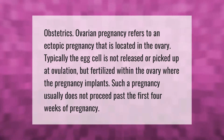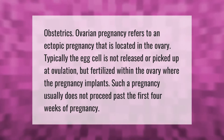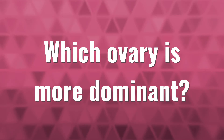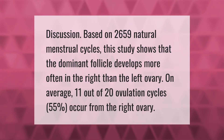Ovarian pregnancy refers to an ectopic pregnancy that is located in the ovary. Typically, the egg cell is not released or picked up at ovulation but fertilized within the ovary, where the pregnancy implants. Such a pregnancy usually does not proceed past the first four weeks of pregnancy.